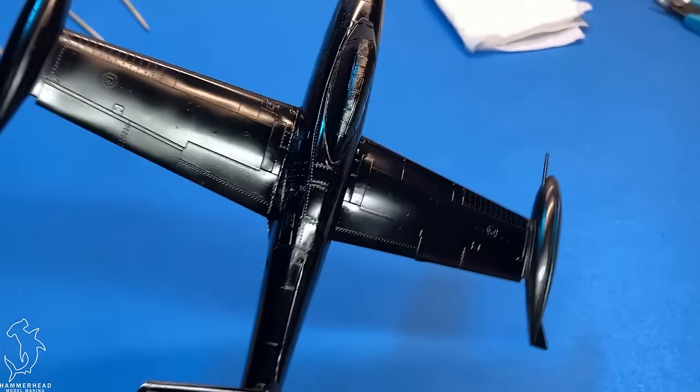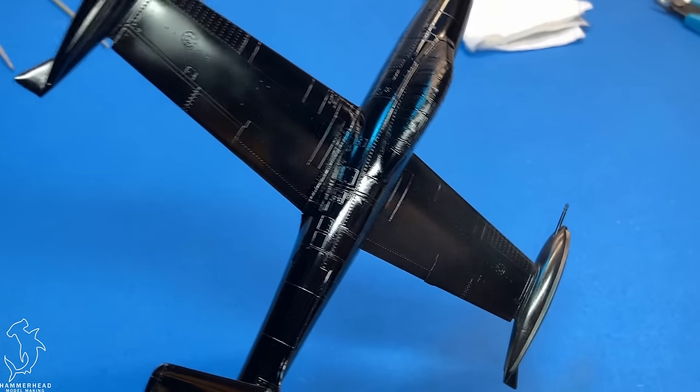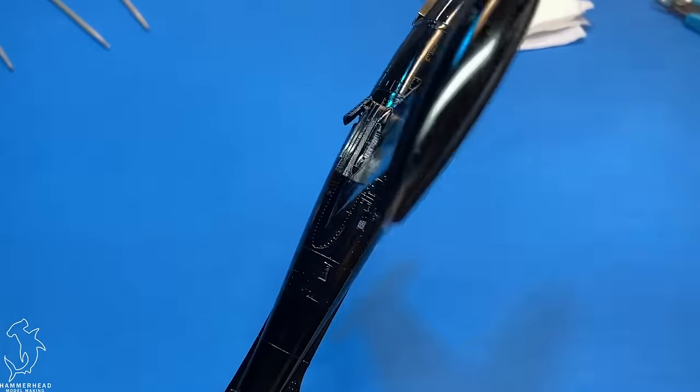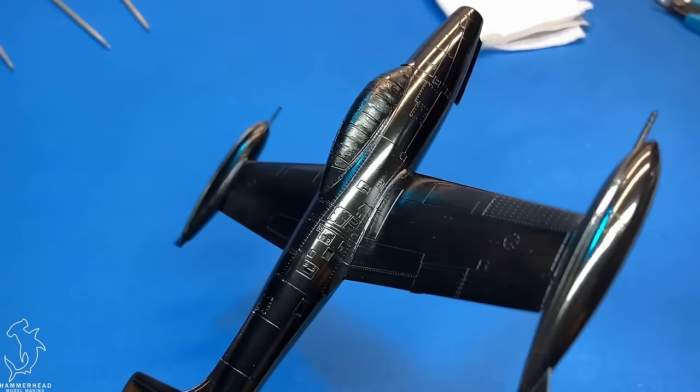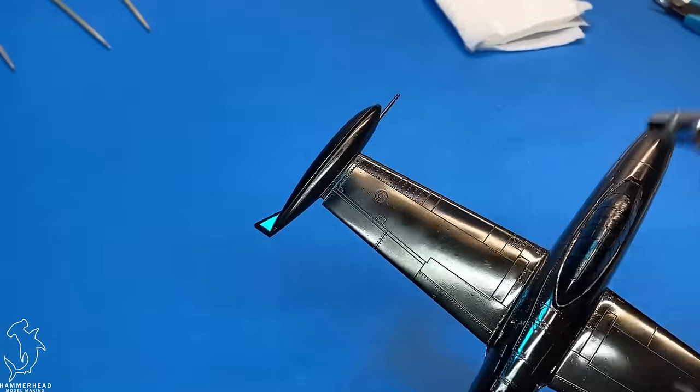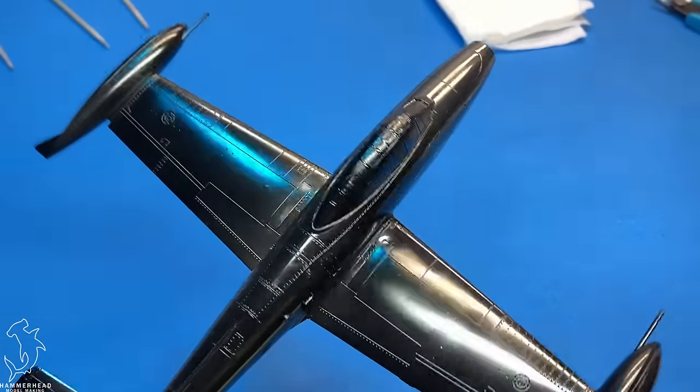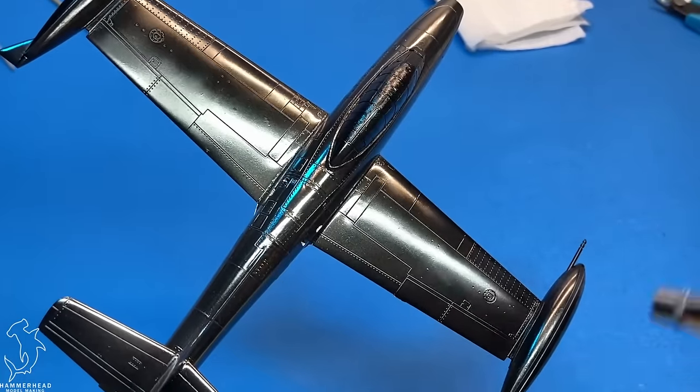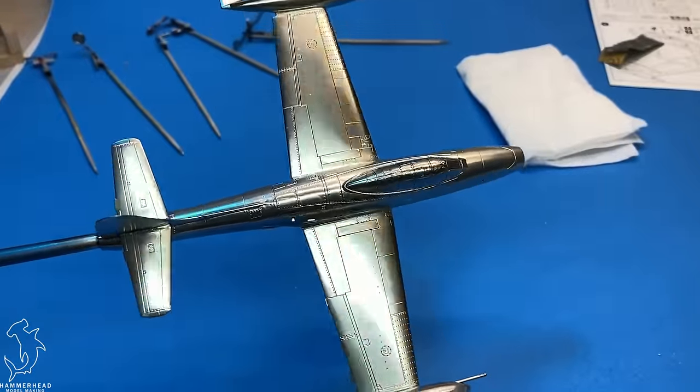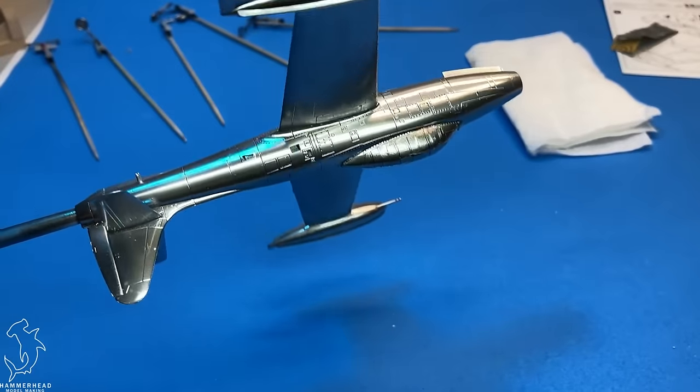But moving on, we're going to be using Alclad's Airframe Aluminum as our metallic coat. Now, this is an extremely delicate and thin paint, even for Alclad in their normal metallic range. And this requires a lot of really, really thin coats to build up to get the shine, at least the shine that I was going for. So I think in the end, I ended up doing about eight really thin coats. So I'd spray the whole thing with thin coat, give it about two or three minutes, then go on to the next coat. And just keep doing that and you keep building that up until you get the shine that you want and how much you want the black showing through from underneath. Because you can see at the beginning, it's still pretty dark. But here after about eight coats, you can see we've got a good, solid, shiny metallic coat all over the aircraft. So quite pleased with it.